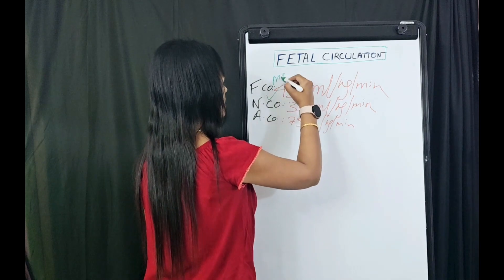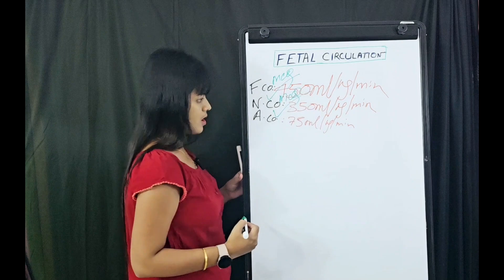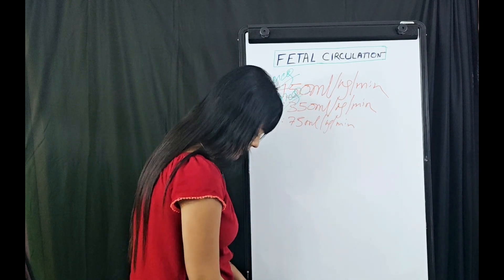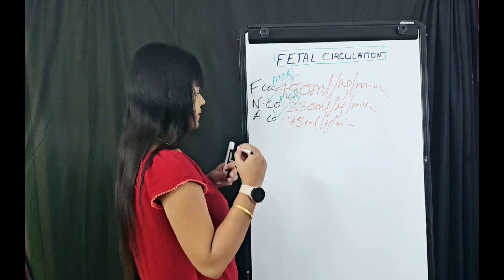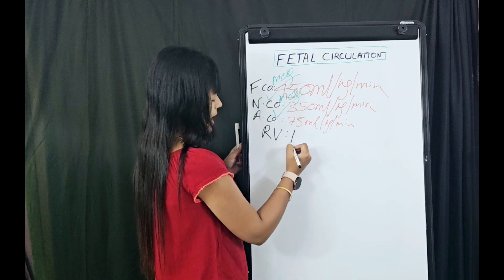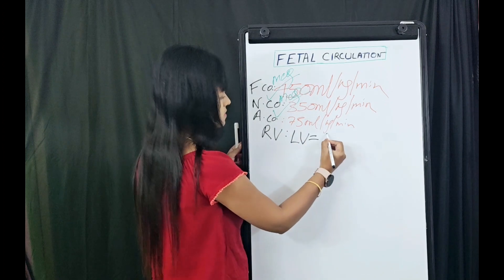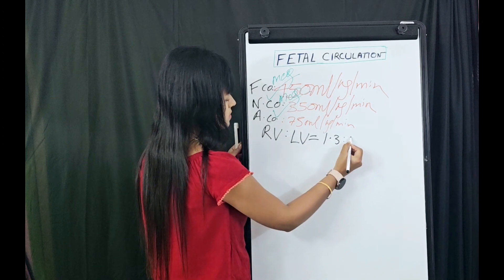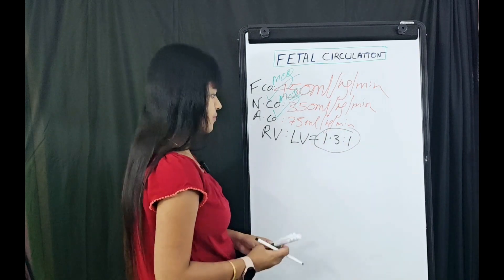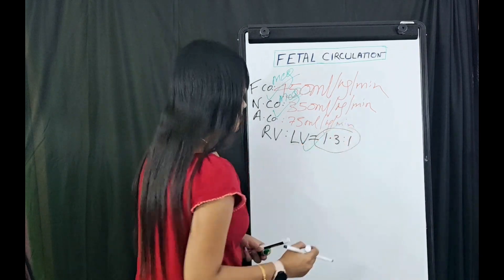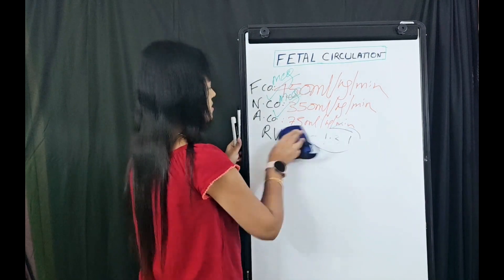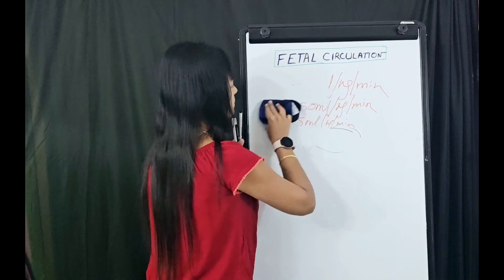The next important thing for MCQ is the ratio between the right ventricle and left ventricle output is 1.3 to 1. In case of adults it is identical, 1 to 1. These are the important MCQ zones from fetal circulation.